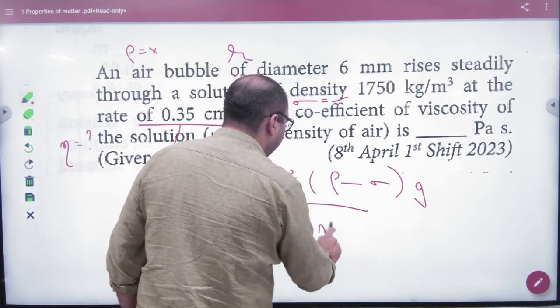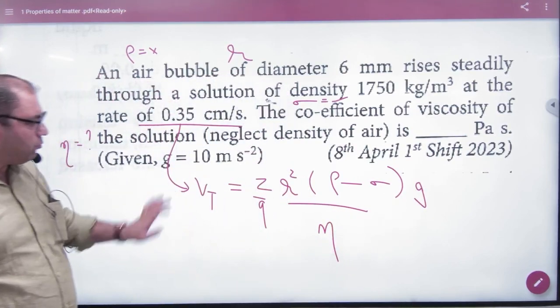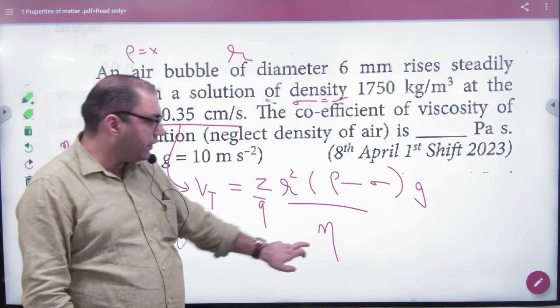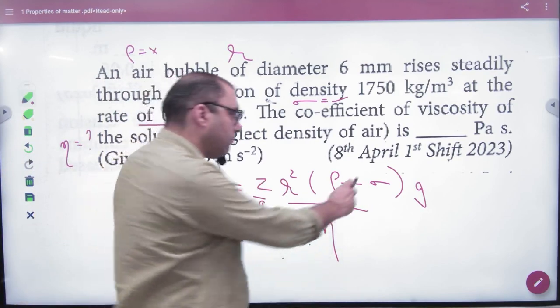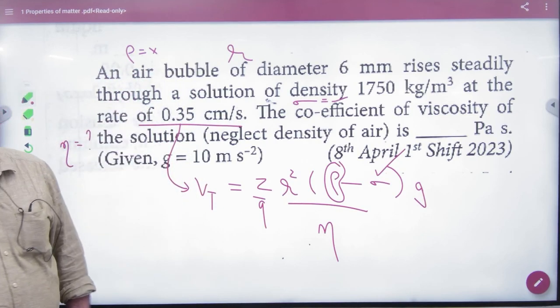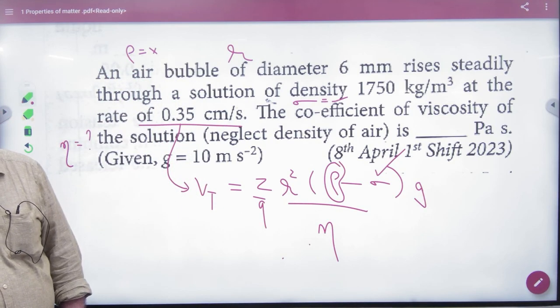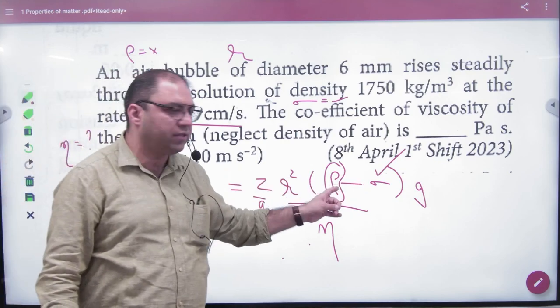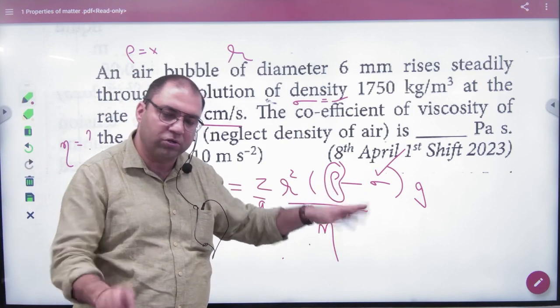Terminal velocity is given, r is known, g is known, σ is known, but air bubble density is not known. However, it says to neglect the density of air. Since solution density is much larger, air bubble density can be neglected. Solve with this simplification to get the answer.